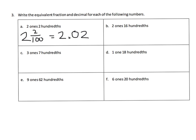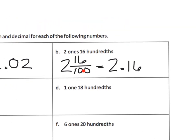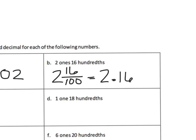Let's try two ones and sixteen hundredths. Two ones and sixteen hundredths looks like this, and we can write that as the decimal two point one six. Some students might just revert to a blind algorithm and say 'two digits, I'll put them right here' — but we don't want that. We want students to reason it out.